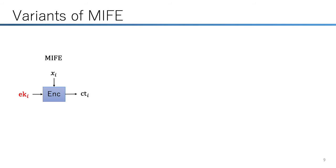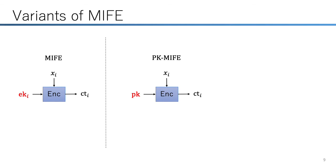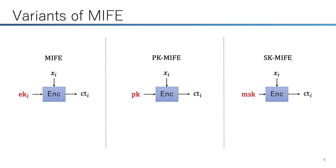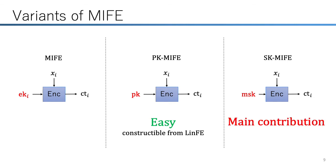We also mention variants of MIFE to clarify our result. As explained, the standard MIFE encryption algorithm takes encryption key i to encrypt a message for slot i. We can also consider cases where encryption takes a public key or master secret key. In public key MIFE, anyone can encrypt a message for any slot. In SK-MIFE, only an owner of the master secret key can encrypt messages. We show that public key quadratic MIFE can be easily constructed from linear MIFE. The main contribution is the construction of SK quadratic MIFE, and constructing standard MIFE for quadratic functions remains an interesting open problem.